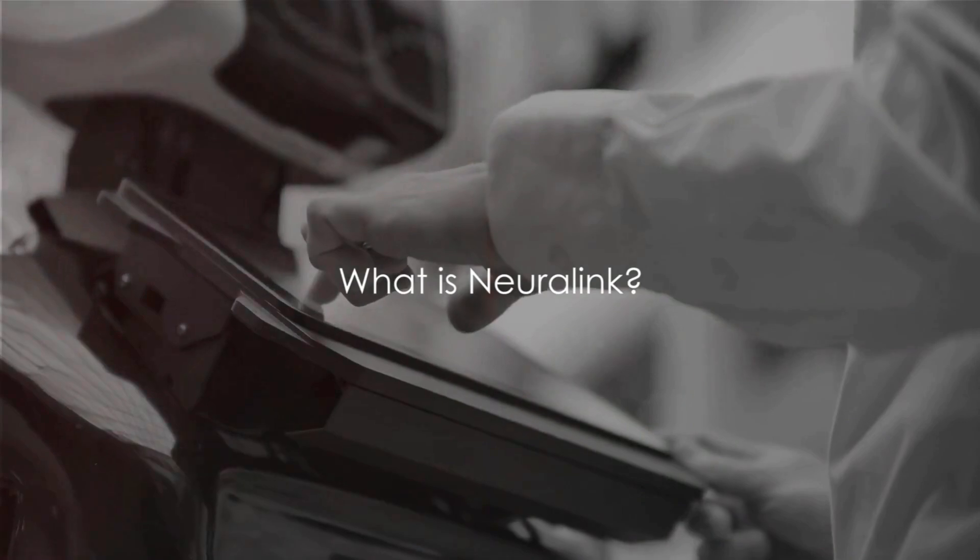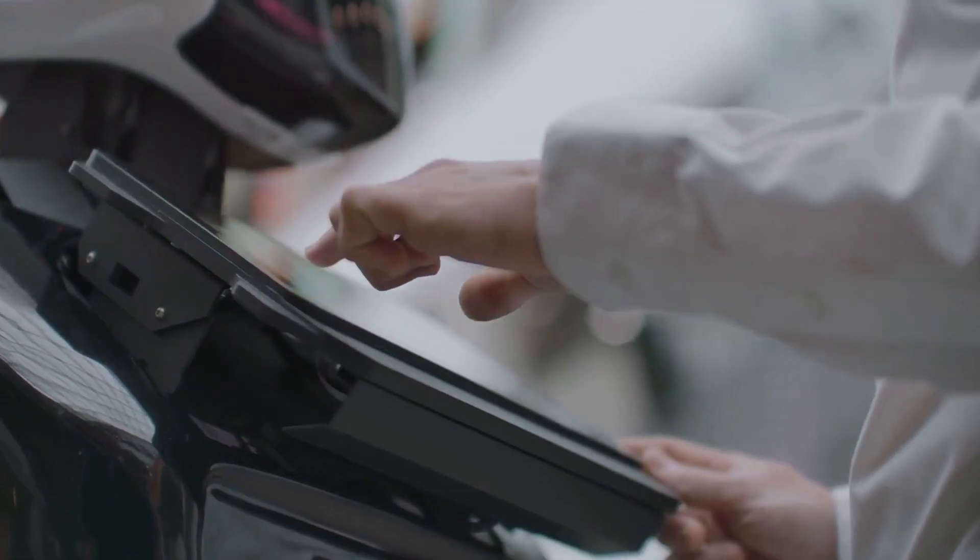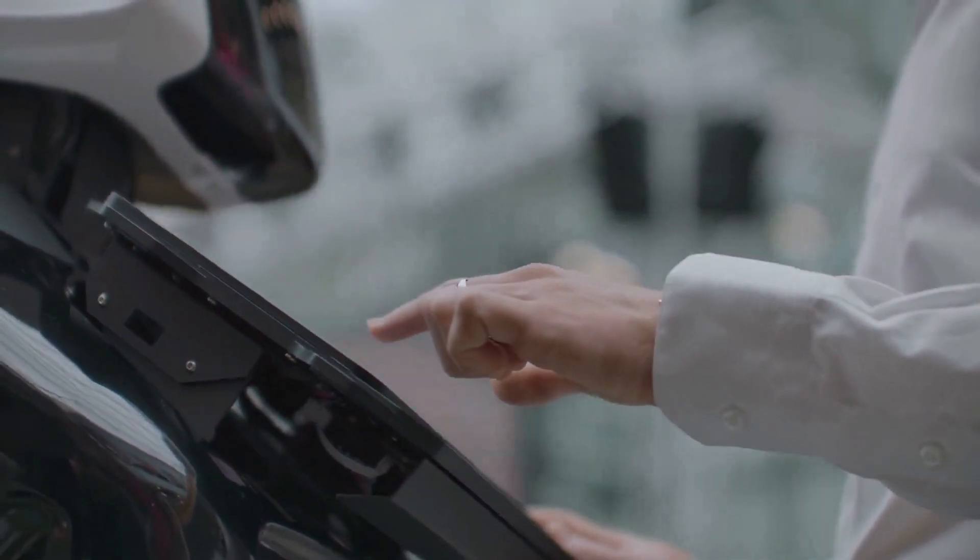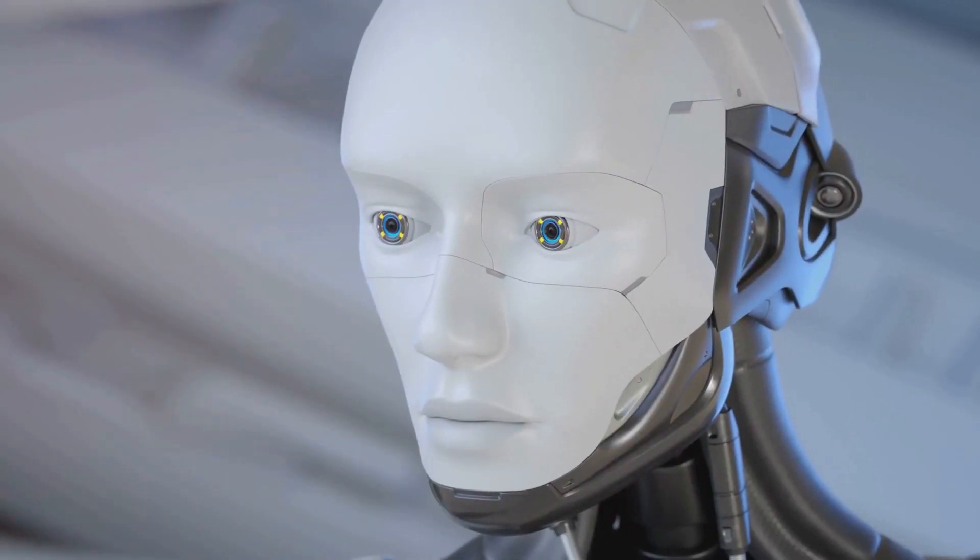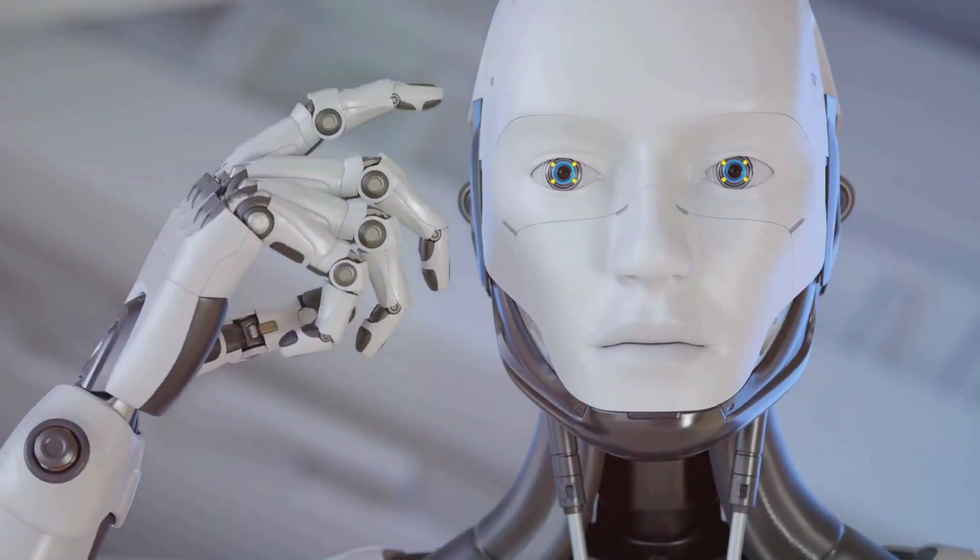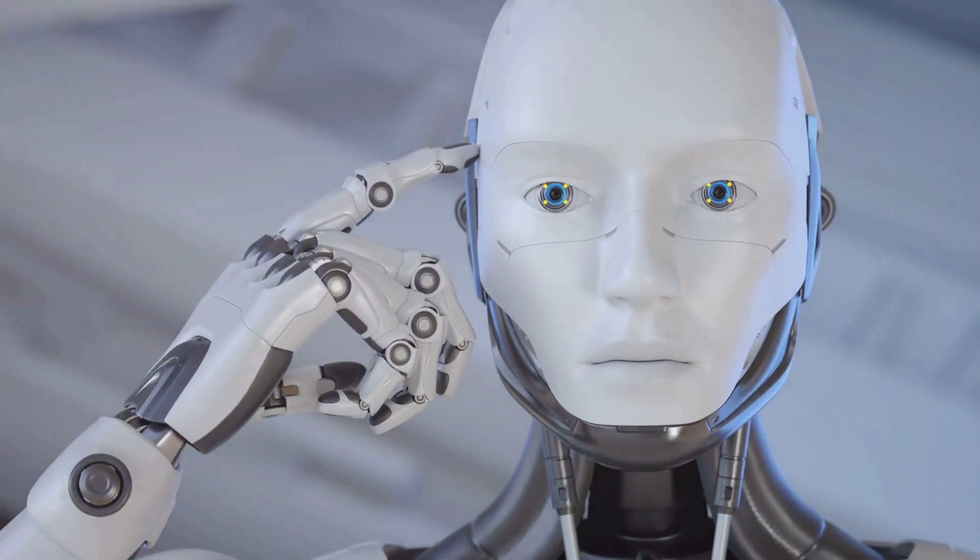So, what exactly is Neuralink, you may ask? Well, Neuralink is a pioneering tech venture co-founded by Elon Musk, with a mission to build a safe and effective clinical solution for people with paralysis. It's a company that is pushing the boundaries of what we know about the brain and artificial intelligence.